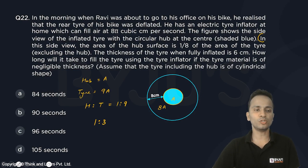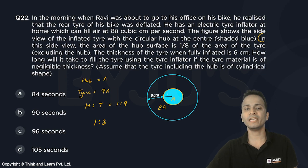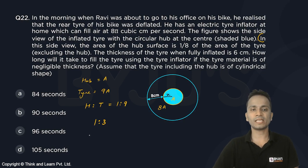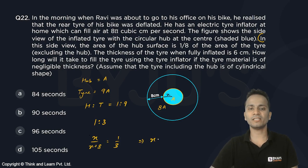Now if you take the radius as x, I can say that x upon x plus 8 is equal to 1 upon 3. From here you can say that the value of x will be equal to 4.